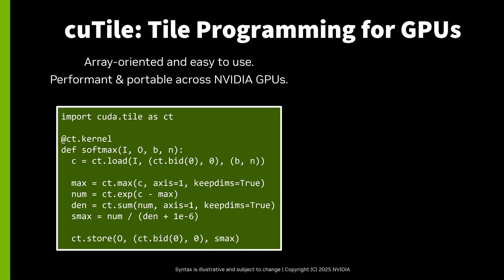Qtile is an array-oriented programming model for NVIDIA GPUs that automates block-level parallelism, memory movement, and tensor core utilization. We've built it to simplify GPU programming and to improve portability for hardware features like tensor cores and tensor memory accelerators.